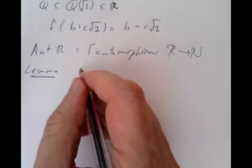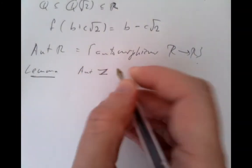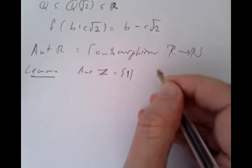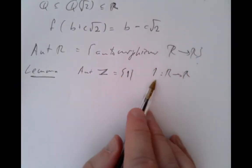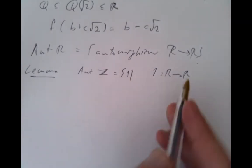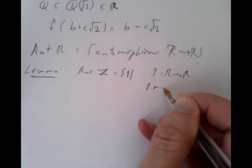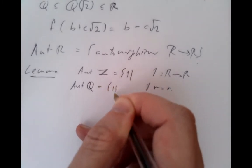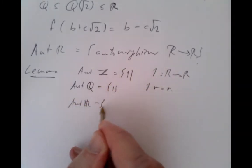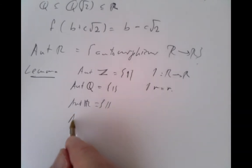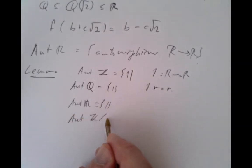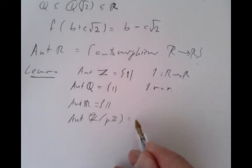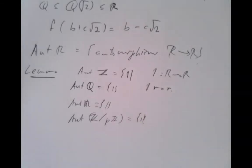It's a lemma. The automorphism group of the integers is just the identity — the trivial morphism that leaves everything fixed. Similarly, the automorphisms of the rational numbers are just the identity, the automorphisms of the real numbers are just the identity, and the automorphisms of ℤ/pℤ — our other favorite field, our finite field — are the same. So these all have trivial automorphisms only.